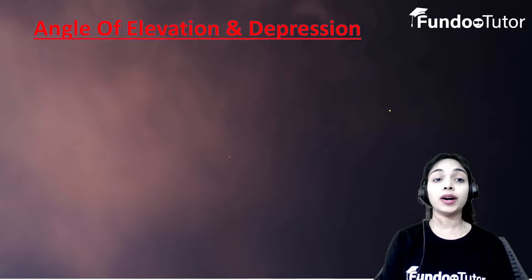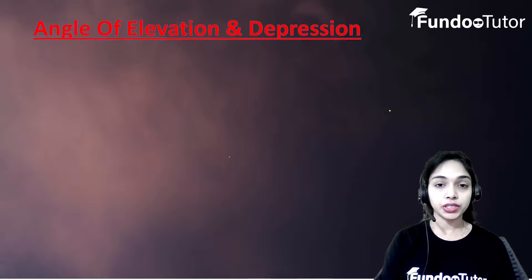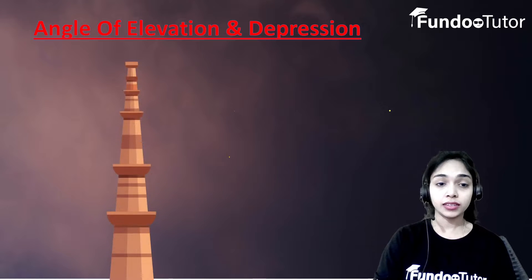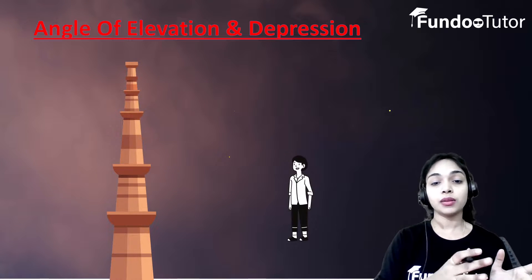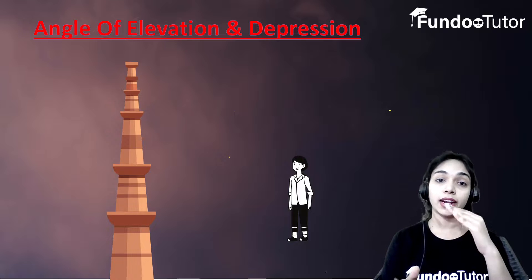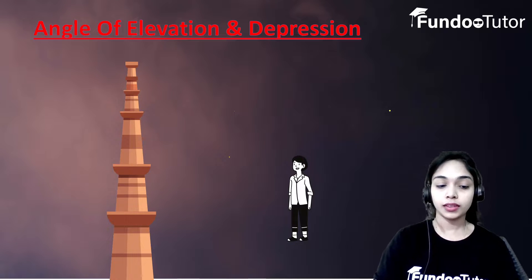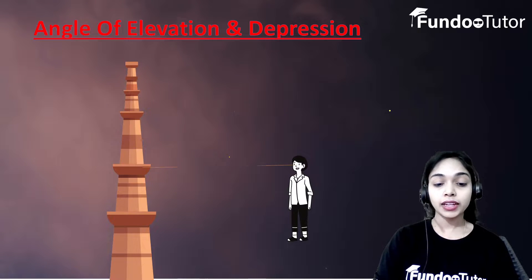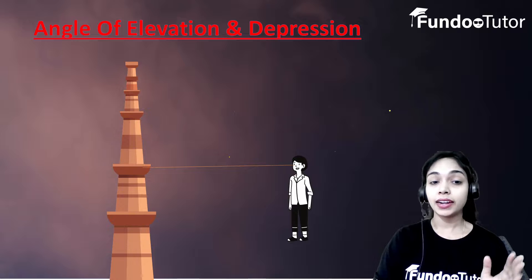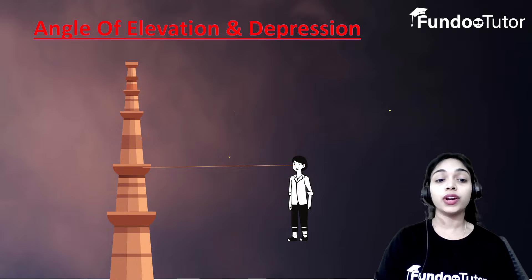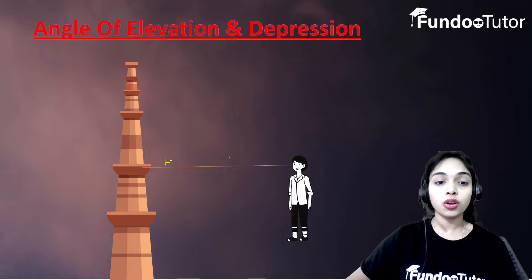In this video we will learn about angle of elevation and depression. We have a manar here, and if a person is standing some distance away from this manar and looking straight toward it, the line drawn from the eye to the point where the person is looking is called the horizontal line.